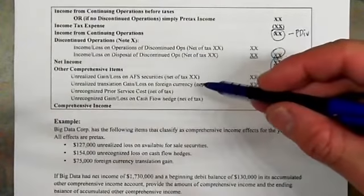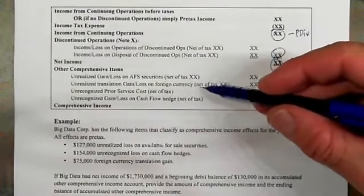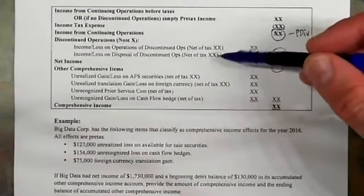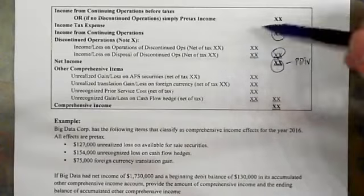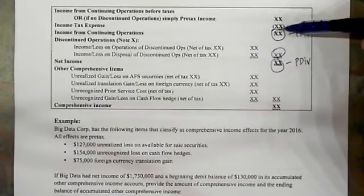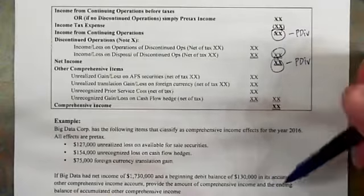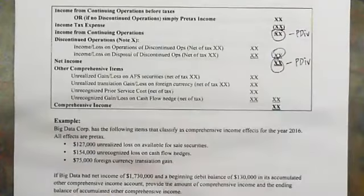Because comprehensive income is below the line, it receives the same treatment as discontinued operations — it is presented net of tax, since it falls beneath the tax expense line. So let's look at some items that could occur.